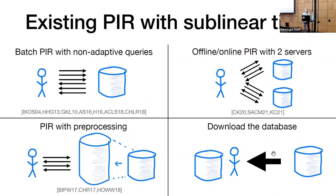A third approach is PIR with preprocessing. In these schemes, the server runs a one-time preprocessing step during which it somehow encodes the database. After this, the server can answer PIR queries using this encoding in sublinear time. And finally, a trivial solution is to have the client download the entire database. The server pays a one-time linear cost to ship the whole database to the client, the client stores it locally and answers all of its queries on its own — so again, amortized over many queries, the server's work is sublinear.